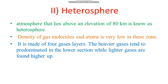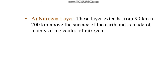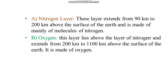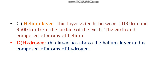The heterosphere is made of four gaseous layers. The heavier gases tend to predominate in the lower sections, while lighter gases are found higher up. These gas zones do not have sharp boundaries but have very gradual transitional boundary zones. The first is the nitrogen layer, extending from 90 km to 200 km. The second is the oxygen layer, extending from 200 km to 1,100 km. The third is the helium layer, extending from 1,100 km to 3,500 km. The fourth is the hydrogen layer, lying above the helium layer.